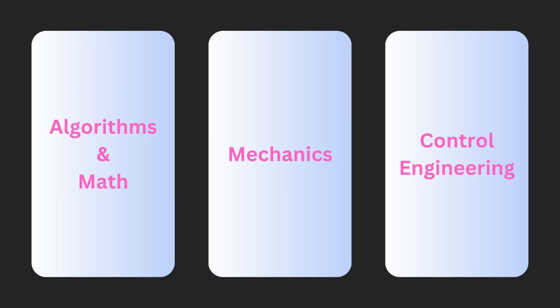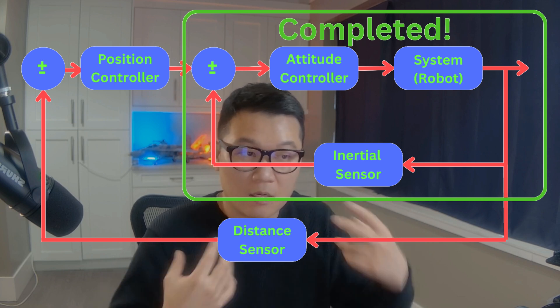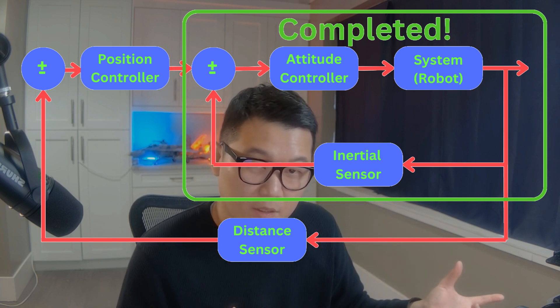Finally, the third block: control engineering. I believe this is one of the most important aspects of robotics and often the missing link in robotics projects. It gives your robot a kind of 'soul' so it can move by itself. The control engineering perspective is about completing the feedback loop, and it overlaps with both algorithms and mechanics. If you're missing this perspective in your background, I definitely recommend looking into control engineering.